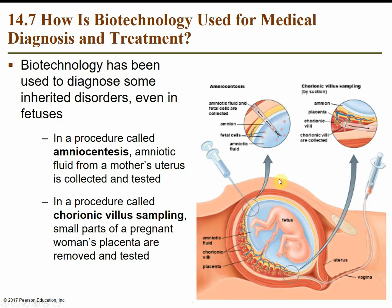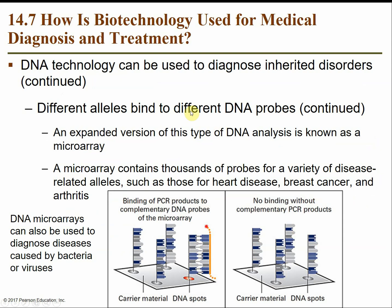Different alleles bind to different DNA probes since probes are specific — they seek and find certain genetic sequences. An expanded version of DNA probe analysis is called a microarray, which uses thousands of probes on the same sample to test for a variety of known disease-related alleles simultaneously. We can also use this to diagnose diseases caused by bacteria or viruses — like flu tests or COVID-19 tests. When they do that nasal swab, we've mapped the genetic sequence of these viruses and created probes that target those specific sequences, lighting up for a positive result.